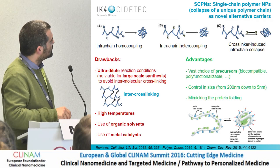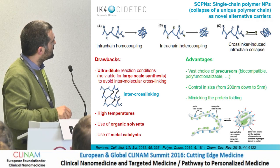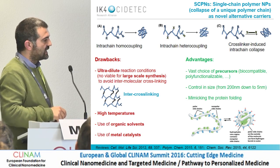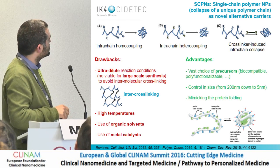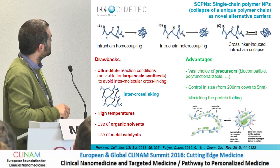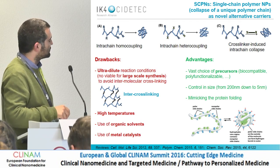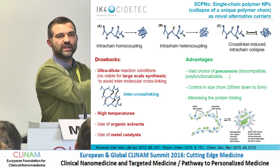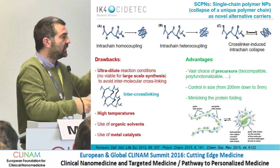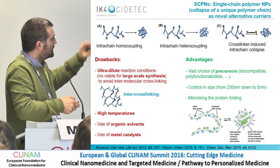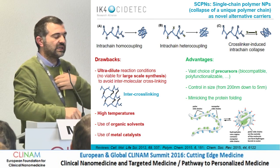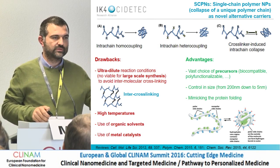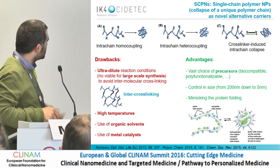Alternatively, you can use a cross-linker. If you have functionalities complementary to those on your polymer, you can collapse the nanoparticle. The main drawback is that to have a single chain nanoparticle you usually have to work in ultra-dilute conditions, to avoid inter-cross-linking — you want a single chain to interact with itself and not with other chains. Otherwise you create micro- or nano-microgels. This is a big problem because ultra-dilute conditions make it difficult to scale up the process, limiting translatability to the clinic or market.